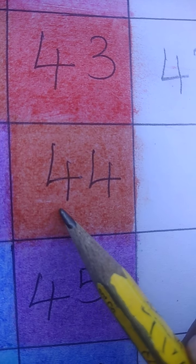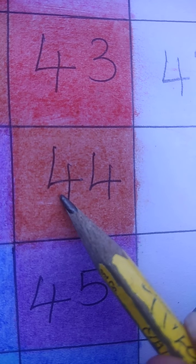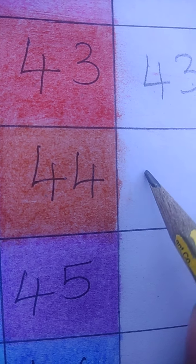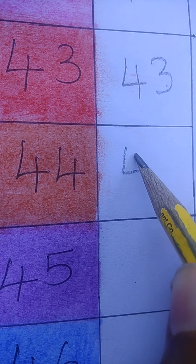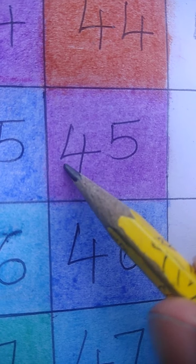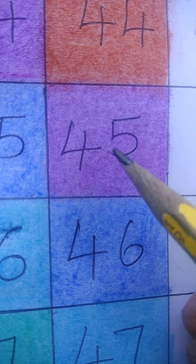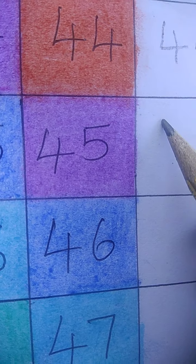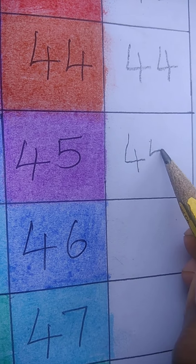Yes children? Next this is 4 4 44. We have to say 44. 4 4 44. Next number 45. 4 5 45. Let's write 4 5 45.